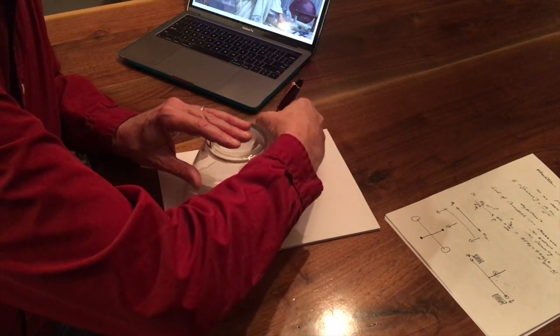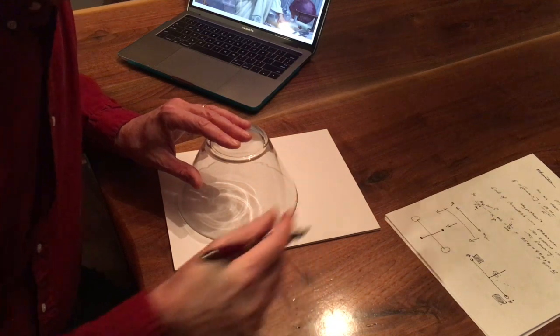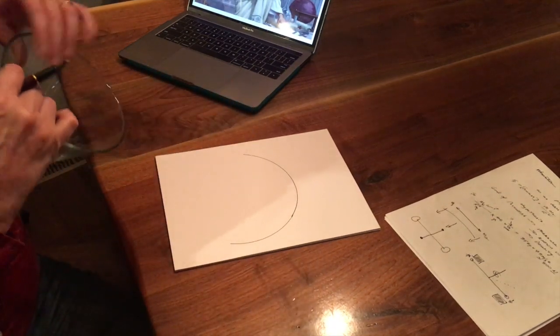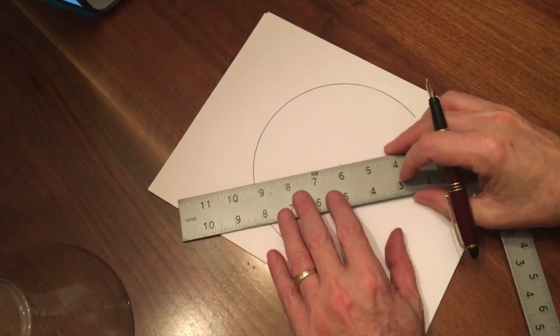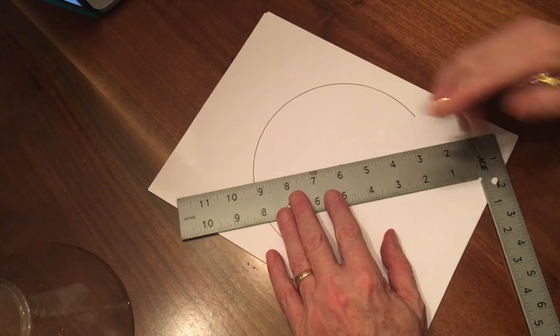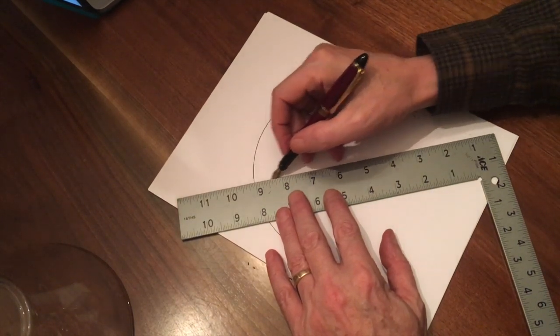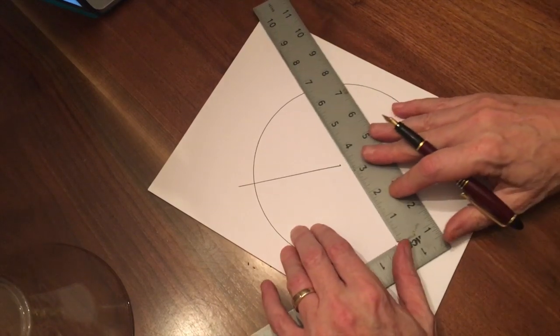Okay, so the first thing that we do is we draw ourselves a surface of the Earth. Any round object will do, and now we've just got a nice arc on the surface of the Earth. Okay, the first thing that we're going to do is we're going to draw a line from the center of the Earth all the way up to our observation height, whatever that is above the surface. So that line will go a little bit past the arc there.